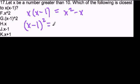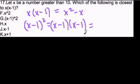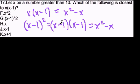That equals x minus 1 times x minus 1. I just want to expand these so I can compare each choice a little bit easier. Using the distributive property: x times x is x squared, x times negative 1 is minus x, negative 1 times x is negative x, and negative 1 times negative 1 is plus 1.